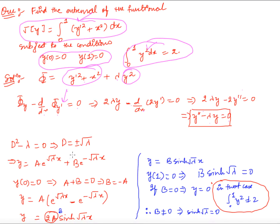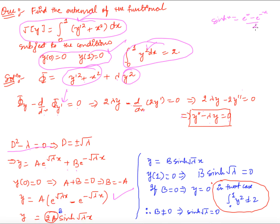This is a second-order linear ODE. The auxiliary equation is D² − λ = 0, so D = ±sqrt(λ). The general solution is y = A·e^(sqrt(λ)·x) + B·e^(−sqrt(λ)·x). Applying the boundary condition y(0) = 0 gives A + B = 0, so B = −A. Therefore y = A·[e^(sqrt(λ)·x) − e^(−sqrt(λ)·x)] = 2A·sinh(sqrt(λ)·x). Calling 2A = b, the solution is y = b·sinh(sqrt(λ)·x).